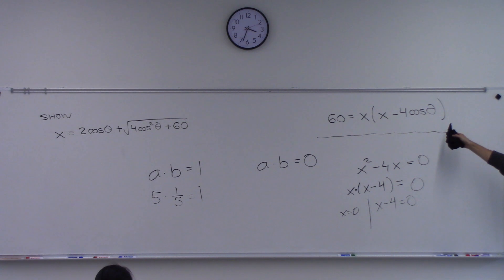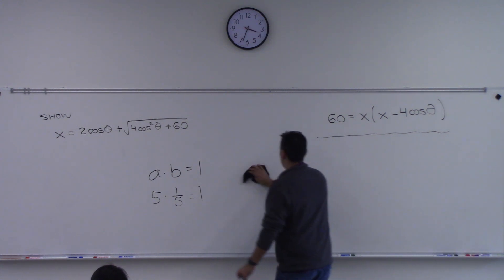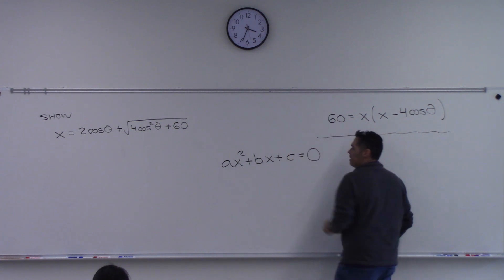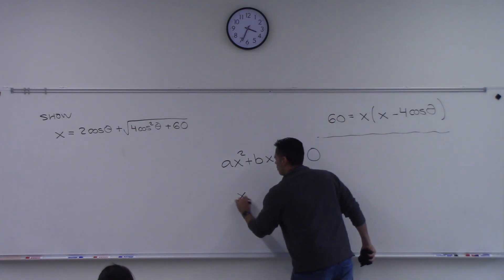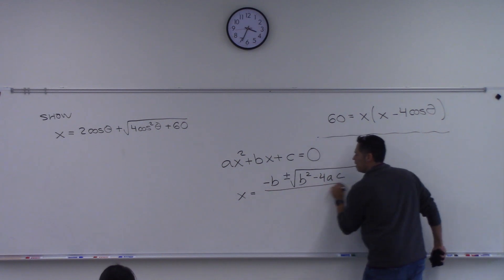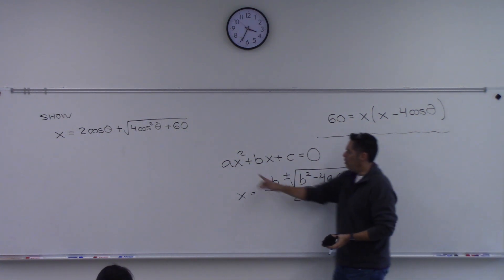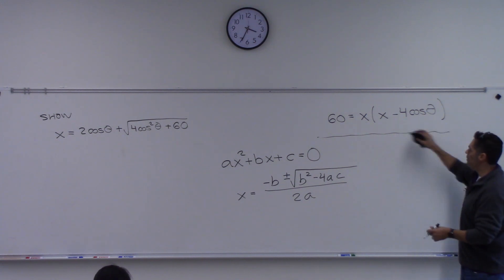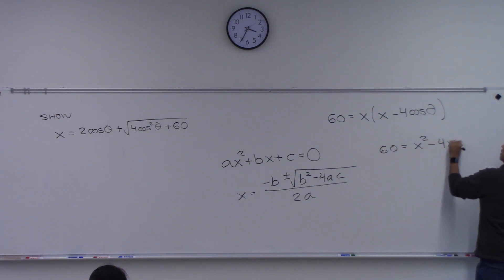So factoring doesn't work here. Now I get to show you what most of you have never seen. If I'm trying to solve a quadratic equation, we have the quadratic formula: x equals negative b plus or minus the square root of b squared minus 4ac, all over 2a. Going back to our equation before factoring: x squared minus 4x cosine theta minus 60 equals zero.